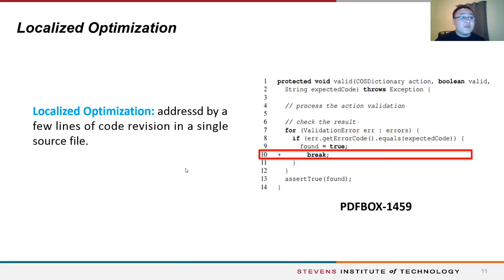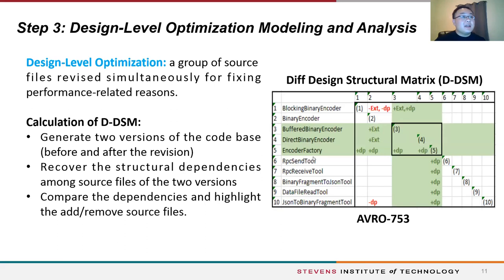By analyzing the code resolution of each issue, we observed that some issues are addressed by a few lines of code revision in a single source file — namely localized optimization. For example, adding a break to jump out of a loop to avoid unnecessary execution. Other issues are addressed by revising a group of source files simultaneously — namely design-level optimization. To understand design-level optimization, we leveraged a new modeling technique called the Delta Design Structure Matrix, or DDSM.